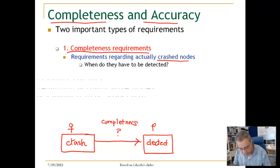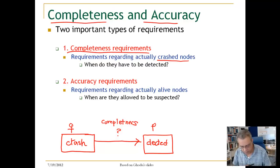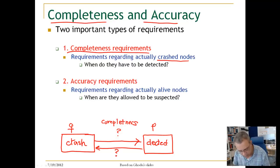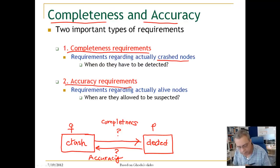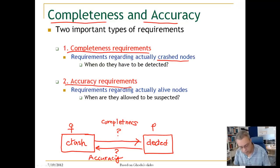Another interesting property is accuracy. Accuracy is talking about: if I as node P detect that Q has crashed, did it really crash? Accuracy is a requirement regarding my opinion about other alive nodes — when am I allowed to suspect that a node has crashed, and if I detect a crash, did it really crash?